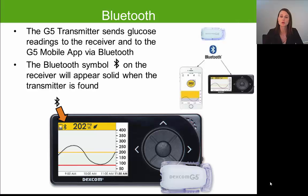Your transmitter is now going to communicate with your display device via Bluetooth technology, so long as your display device and your transmitter remain within 20 feet of each other. When you start using a new transmitter for the first time, you'll see the Bluetooth symbol on your display device flash or blink, indicating they are attempting to pair. Once that Bluetooth symbol becomes solid or stops blinking, it indicates that your display device and transmitter have successfully paired and are communicating with one another.